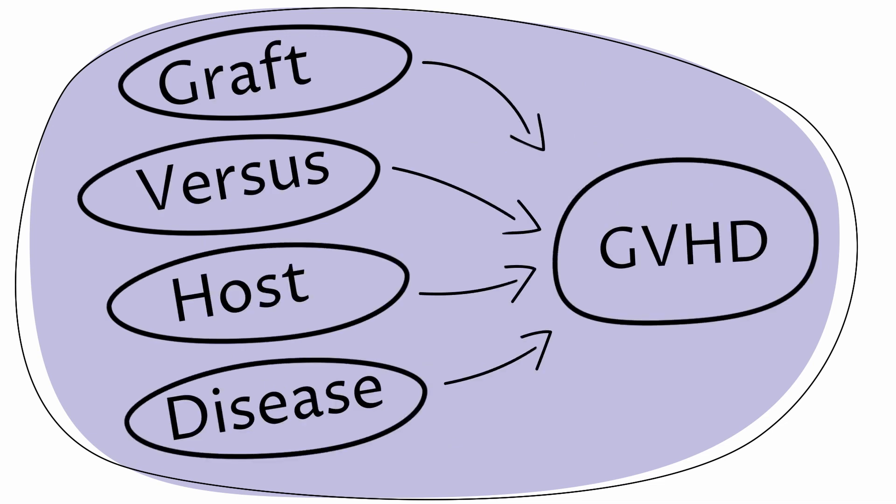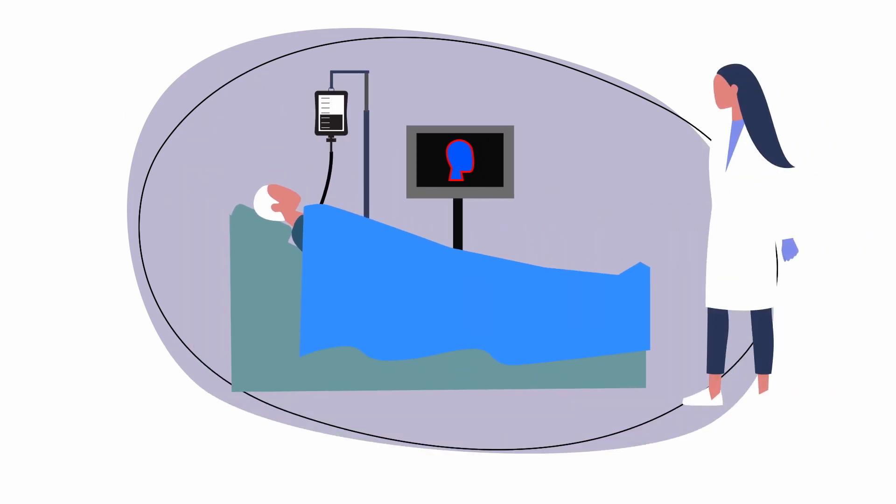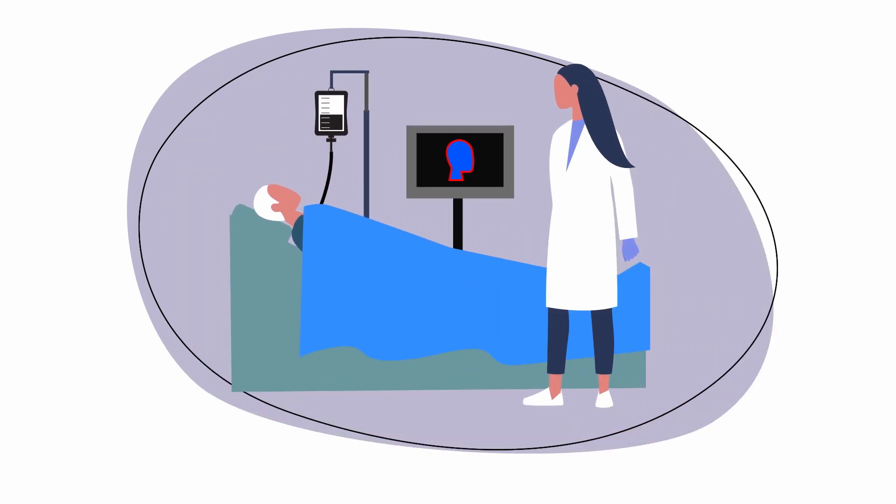GVHD happens when the donor's stem cells attack your body cells, causing inflammation, which is possible even if your donor is a 100% match. There are two types of GVHD known as acute and chronic, both of which can range from mild to severe and even life-threatening in some cases.